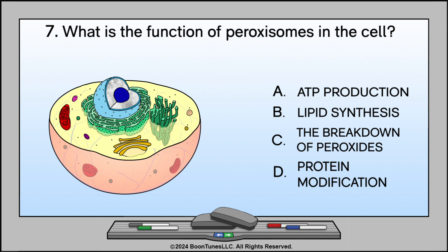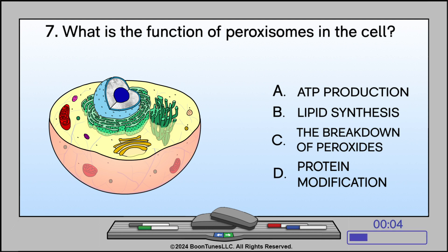What is the function of peroxisomes in the cell? A. ATP production, B. Lipid synthesis, C. The breakdown of peroxides, or D. Protein modification? The answer is C. The breakdown of peroxides.